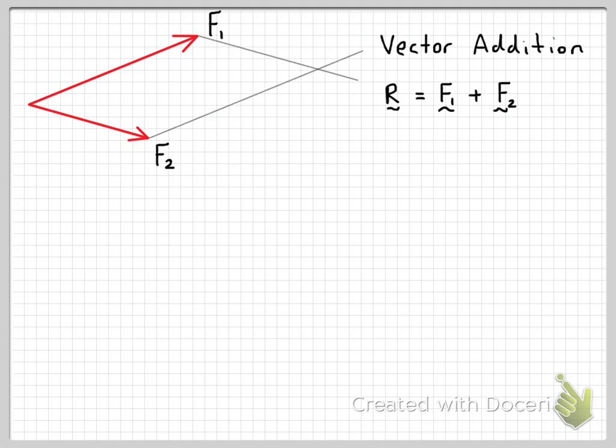So once we have our parallelogram drawn, so here's our parallelogram like this. The next step is to draw a line from the base of our two forces or two vectors across to the opposite corner of the parallelogram. And that line that we've drawn here will be the resultant vector or force of f1 plus f2.